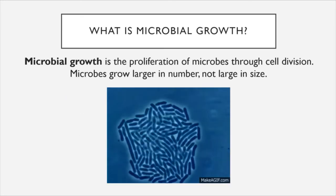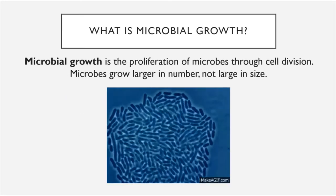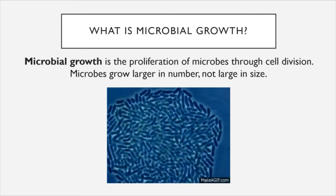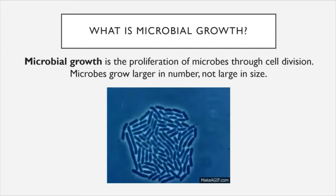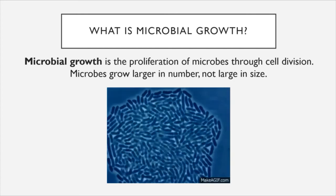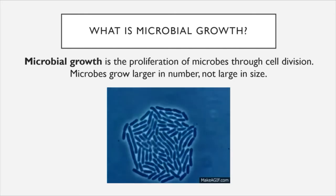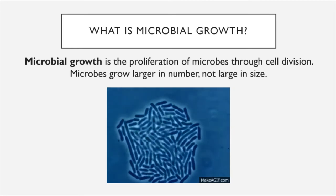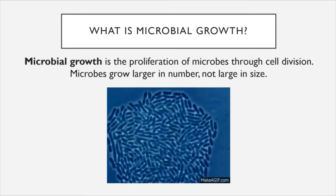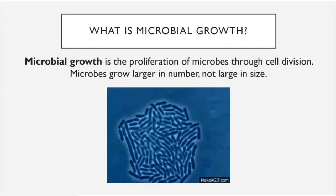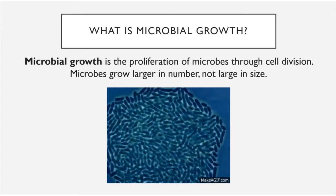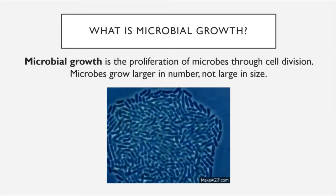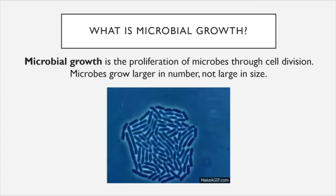When we talk about microbial growth, what we're referring to is not the growth of the microbes to be larger in size, but the growth to be larger in number. Microscopic organisms always stay microscopic — unless we're talking about helminths, which are an exception — but they do grow larger in number. As you can see in this animation, we can start with a small number of microbes and over a very short period of time they can continually divide and clone themselves to create a much larger number.